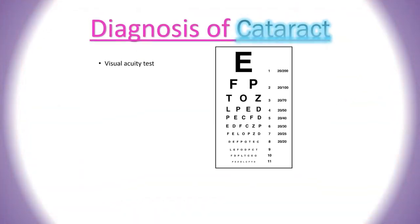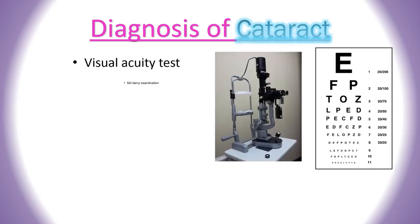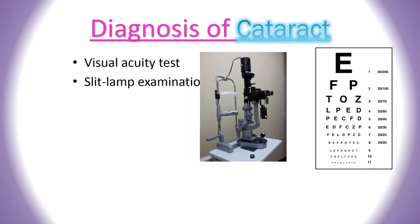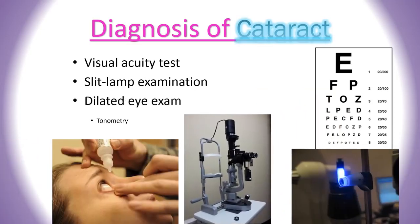Cataract can be detected through a complete eye exam. First, a simple vision test such as the visual acuity test. Slit lamp examination is used to see the anterior structures of the eye under magnification. Then, the dilated eye exam is performed in which drops are placed in the eyes to dilate the pupils, allowing the eye care professional to examine also the retina and optic nerve.